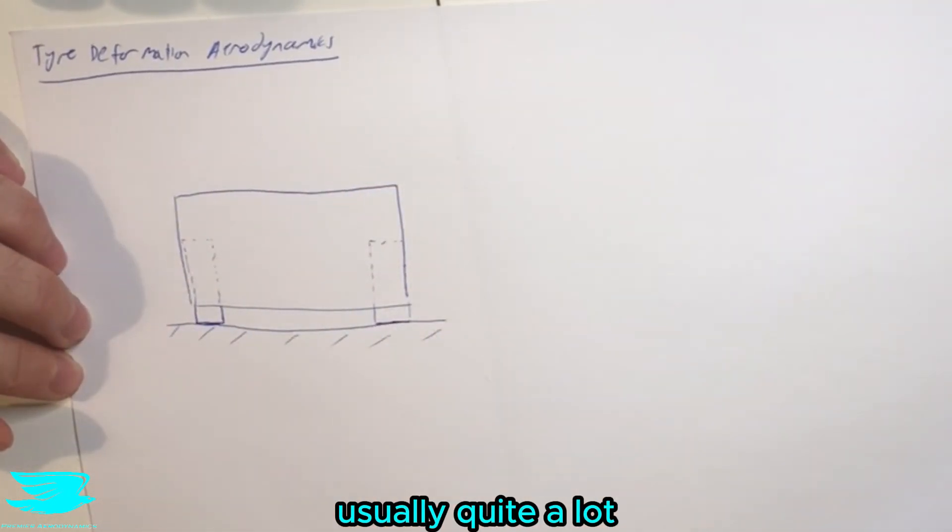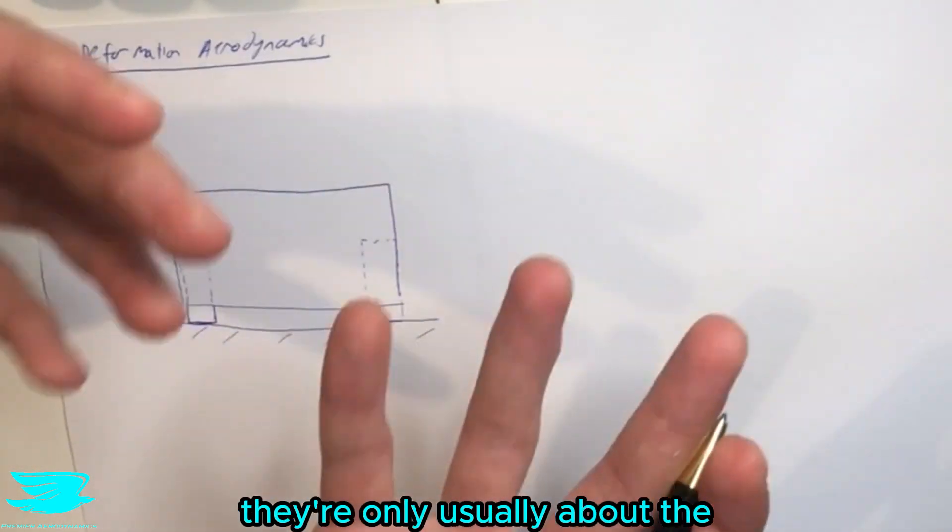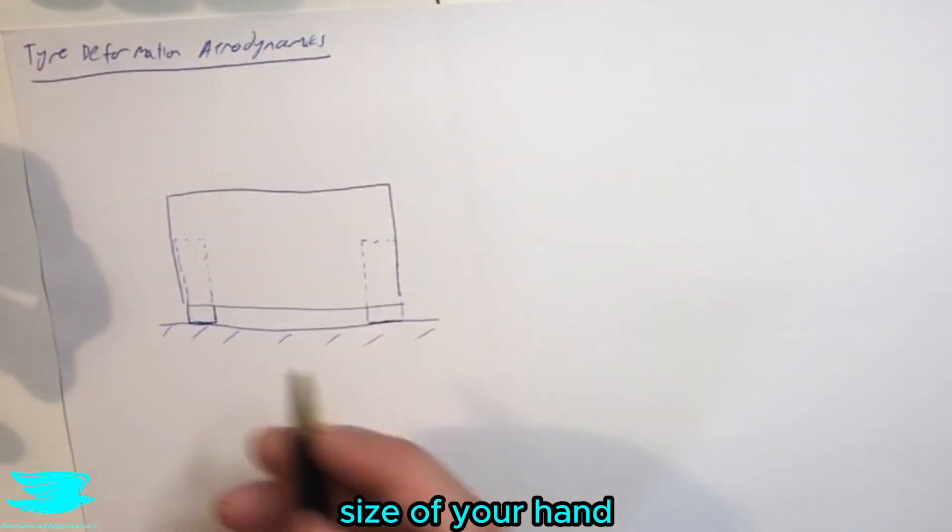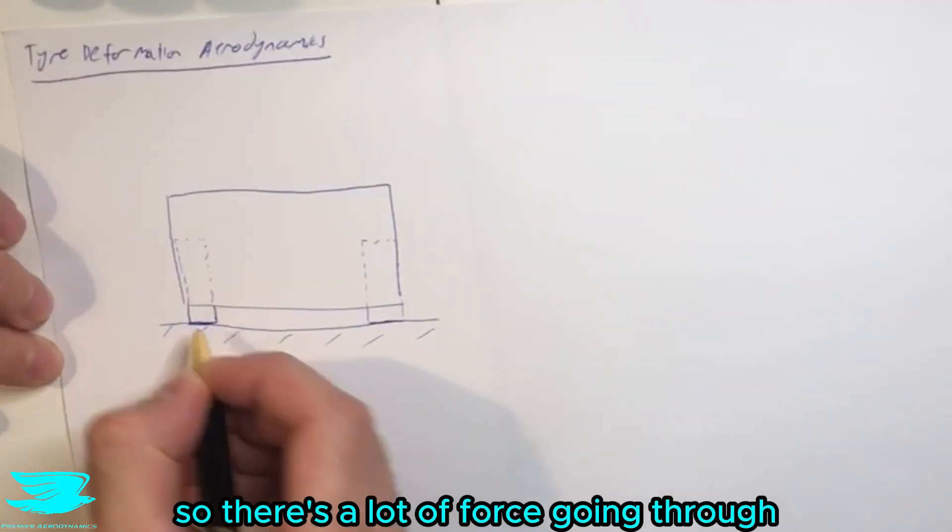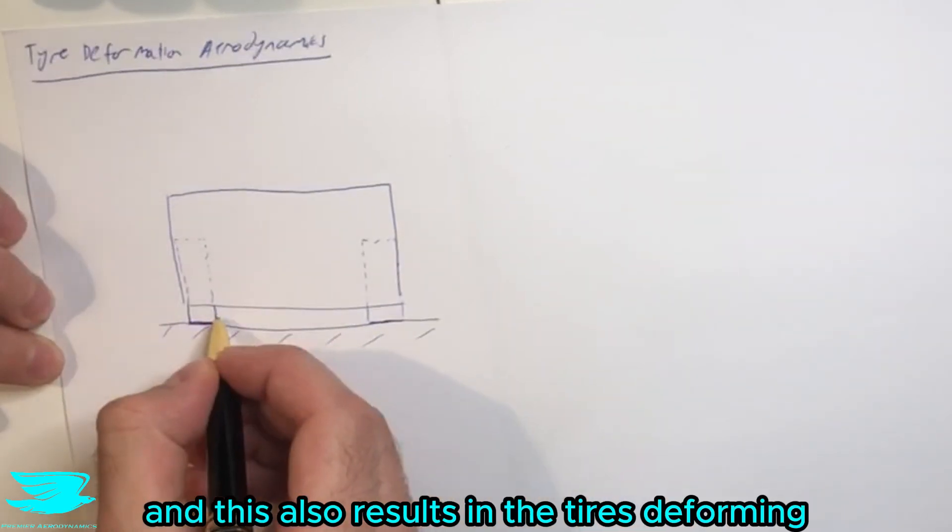Because this car is weighing something, usually quite a lot, the contact patches are actually quite small—they're usually about the size of your hand. So there's a lot of force going through a fairly small region, and this also results in the tires deforming.